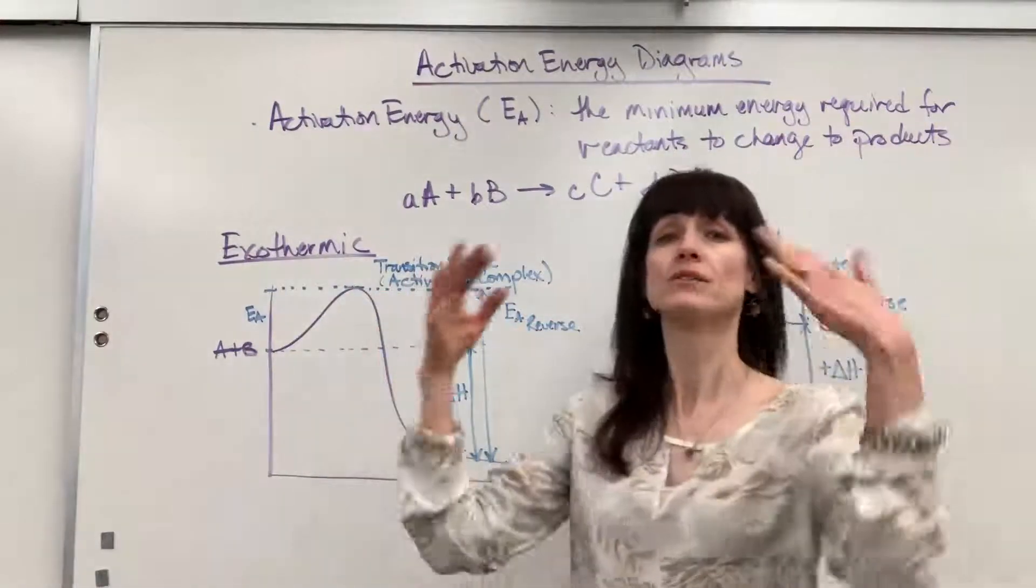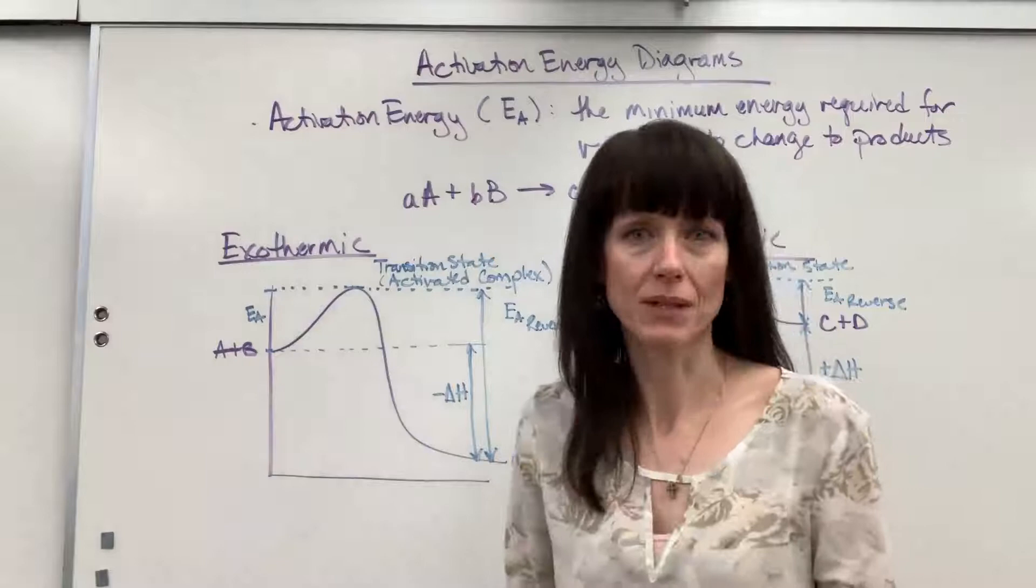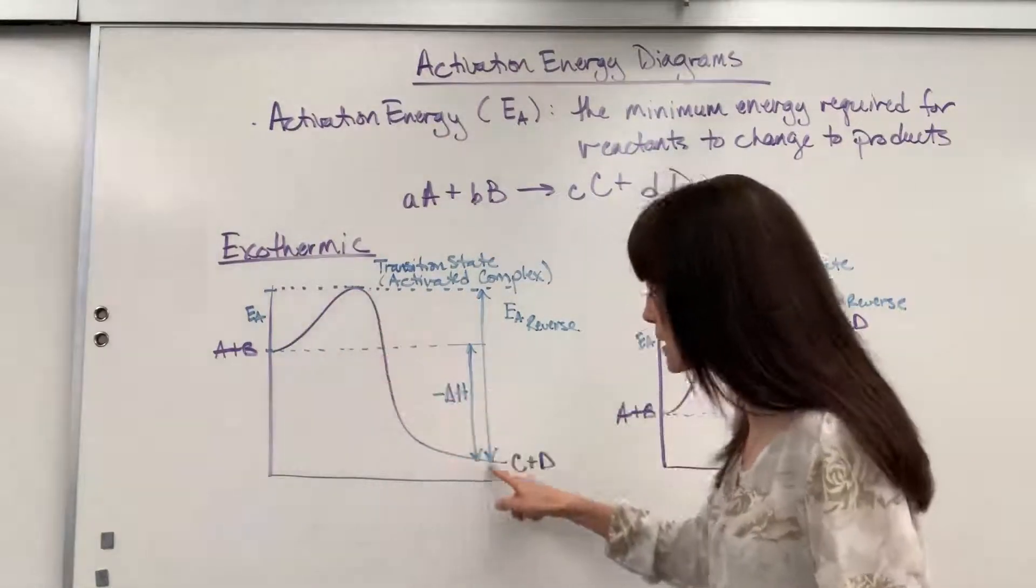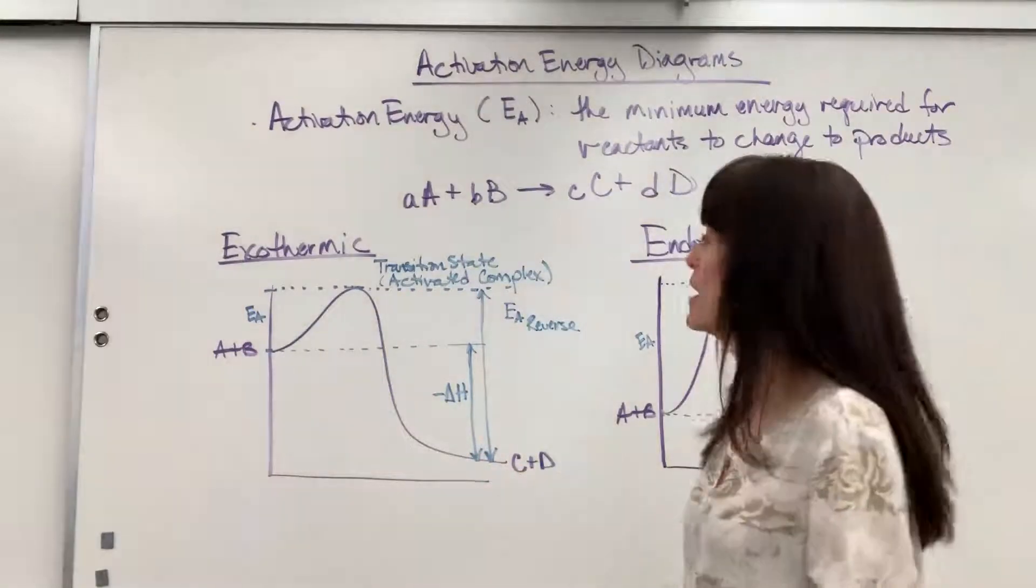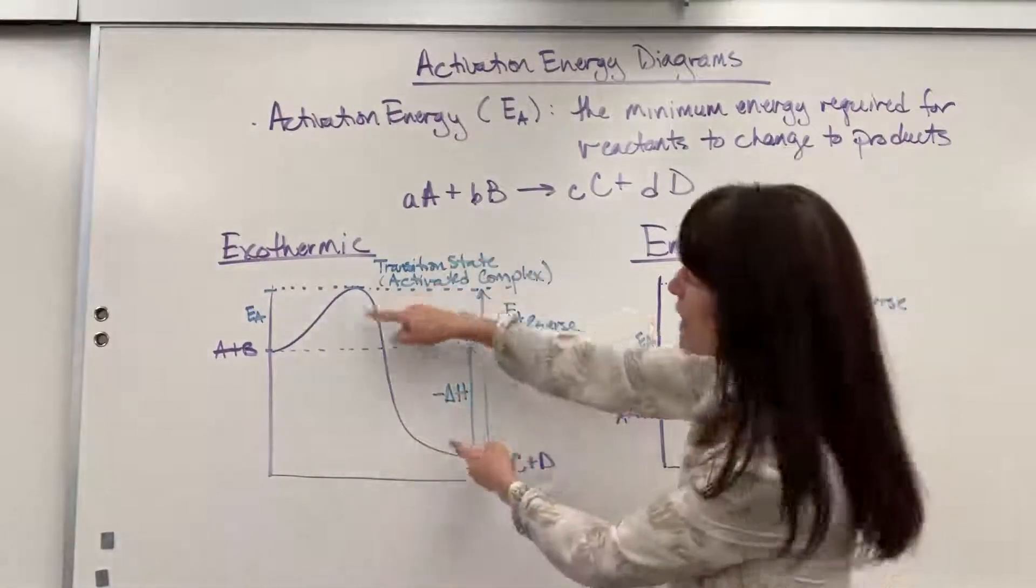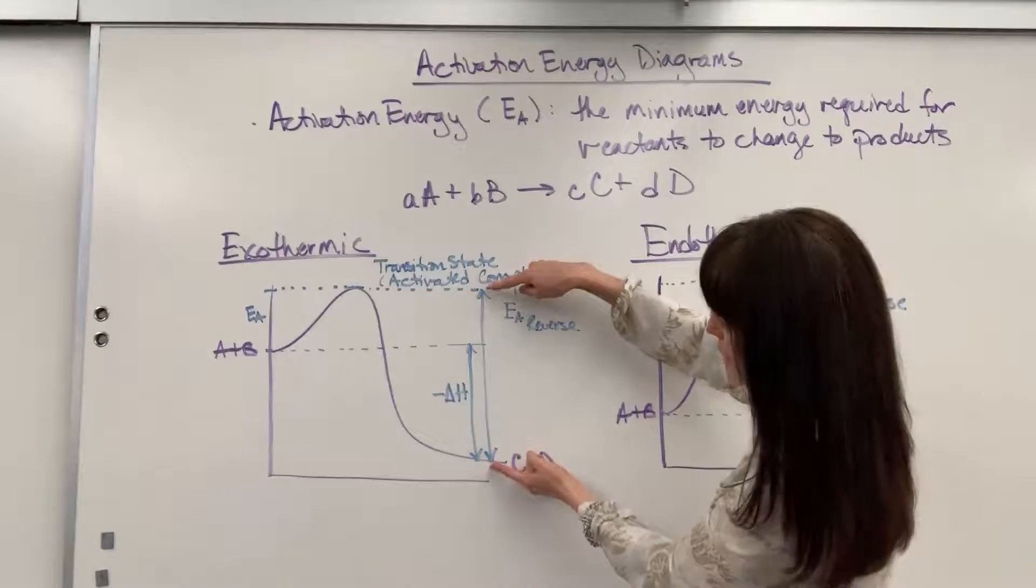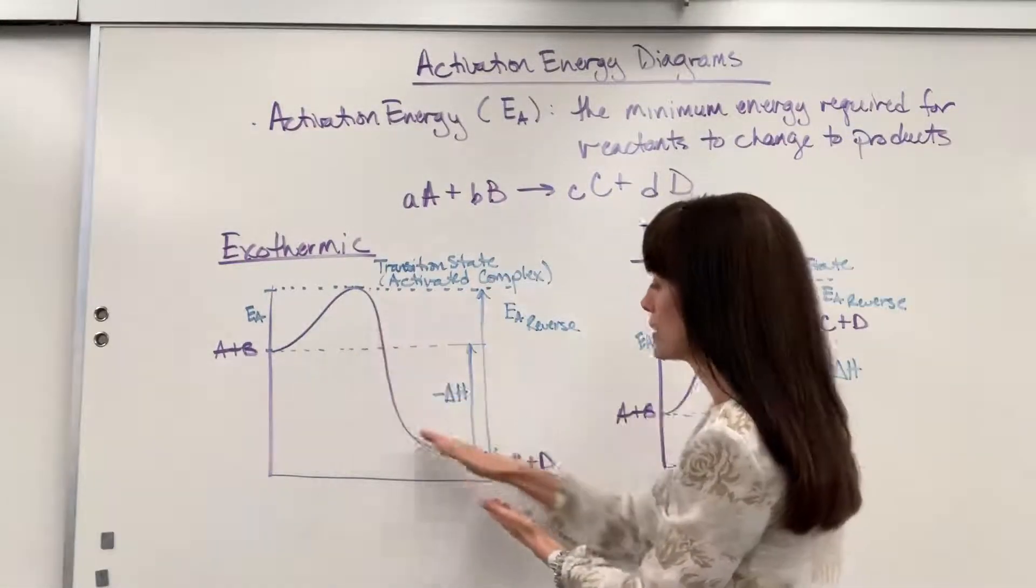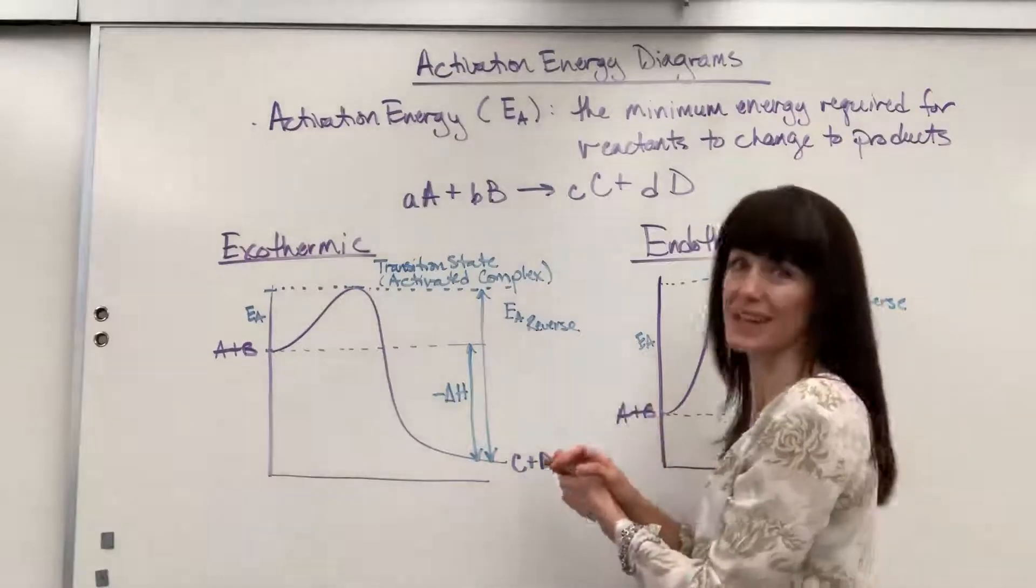Now, when bonds are formed, it creates stability. There's a stability when those bonds are formed. And this is indicating the energy that's released when those bonds are formed. So the energy released right here, this long arrow, that's called the activation energy reverse. Amount of energy released when the products are formed.